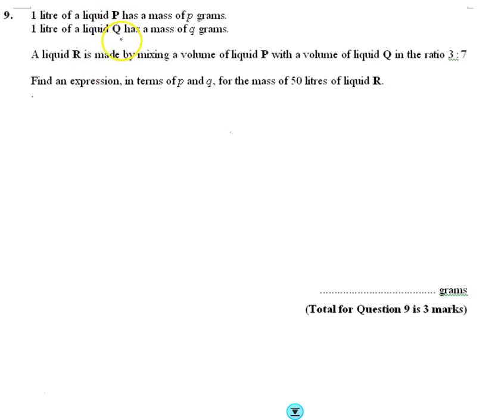Basically they mix some of P and some of Q to make a third mixture, R, and they show it in this ratio, and we want to find out how much of P equals the mass of each.